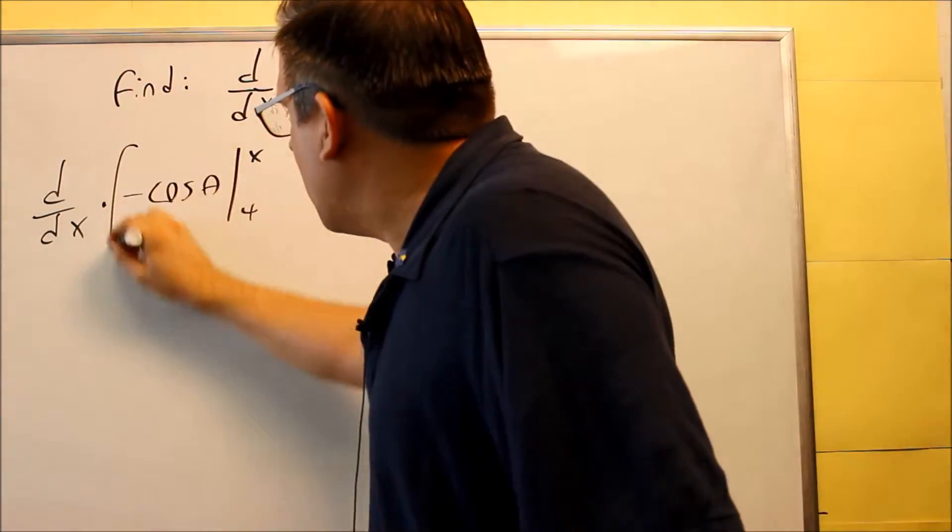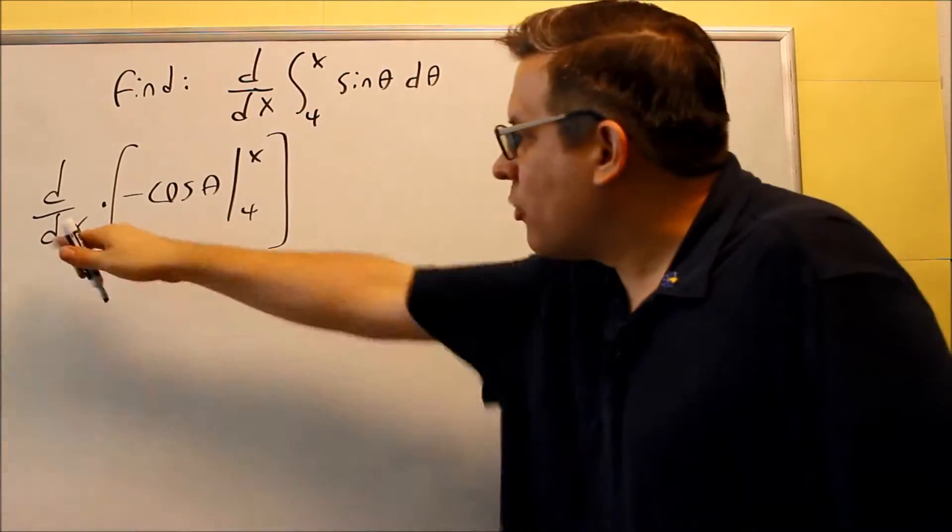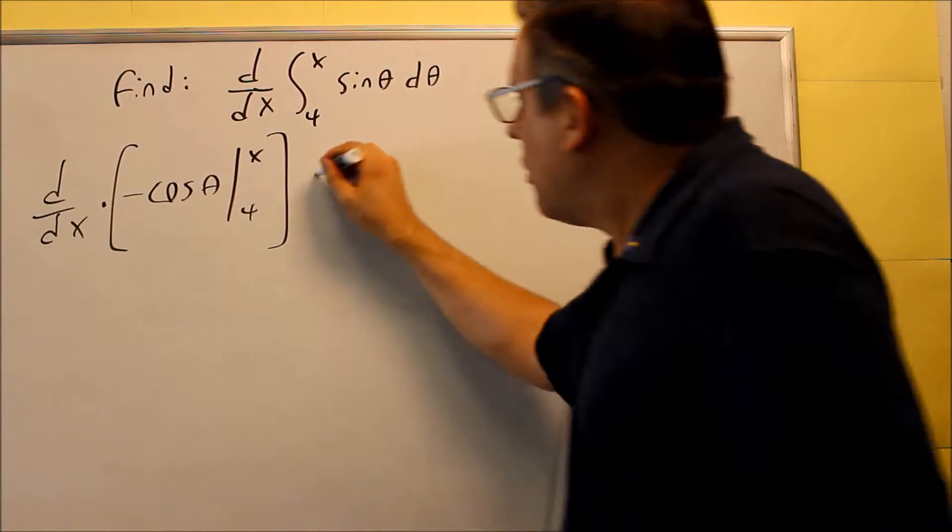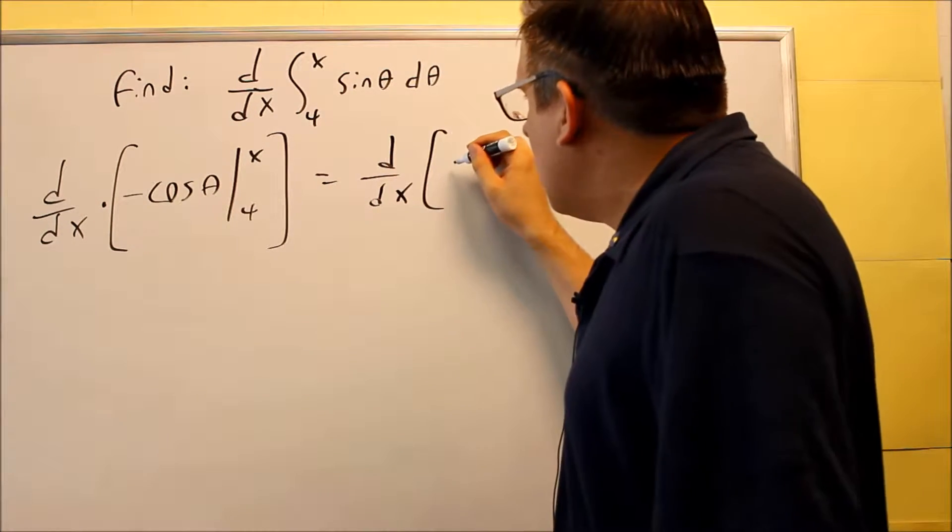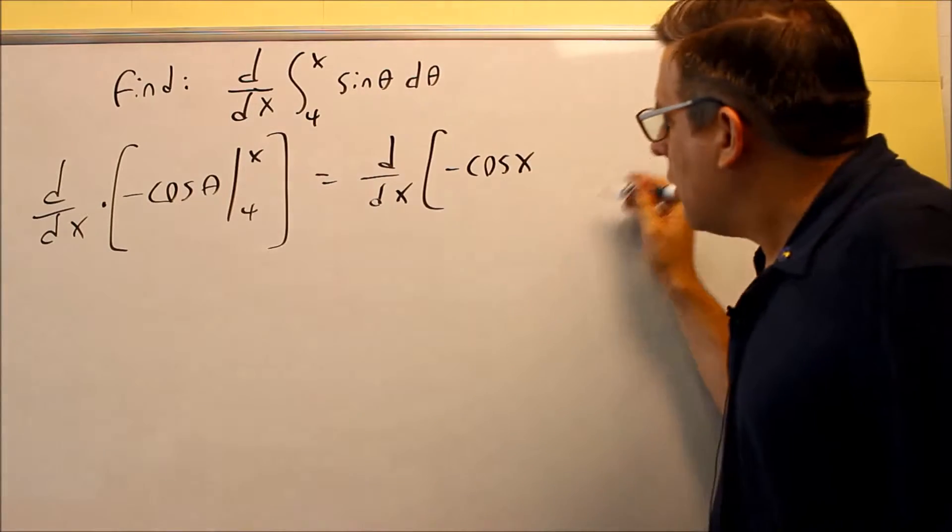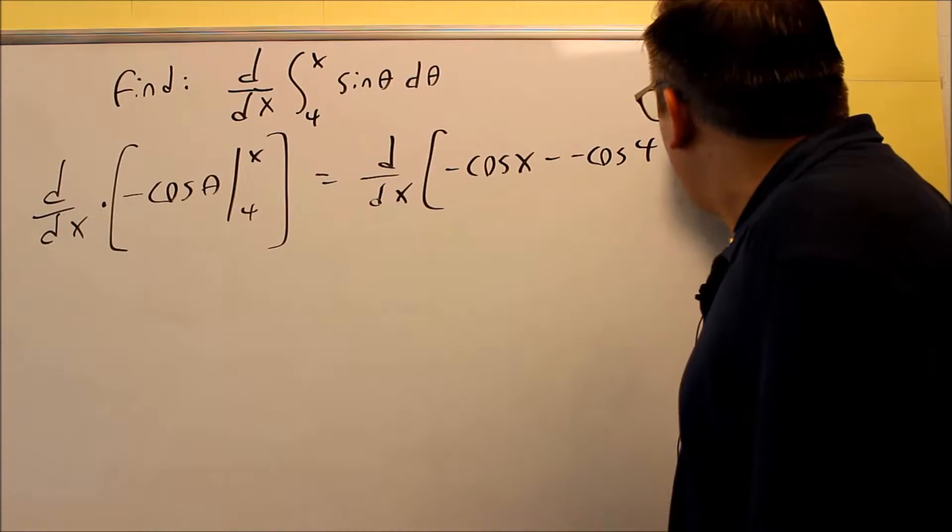So what you can think of here is you're just doing all this inside the brackets first, then we'll take the derivative of it. So next we're going to do the derivative and then inside here, let's work that out, get negative cosine x minus negative cosine of 4,